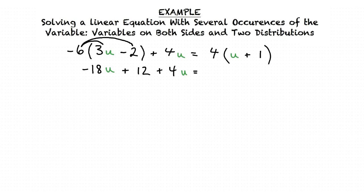Moving over to the right hand side of our equation we can use the distributive property once again to distribute 4 to the quantity of u plus 1. 4 times u is 4u and 4 times 1 is positive 4.